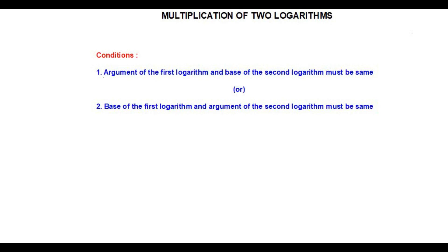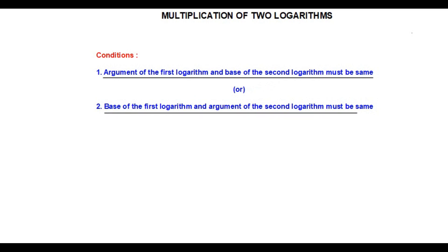To multiply two logarithms, the argument of the first logarithm and the base of the second logarithm must be the same. Otherwise, the base of the first logarithm and the argument of the second logarithm must be the same. Then only we will be able to multiply two logarithms; otherwise, we will not be able to multiply two logarithms.